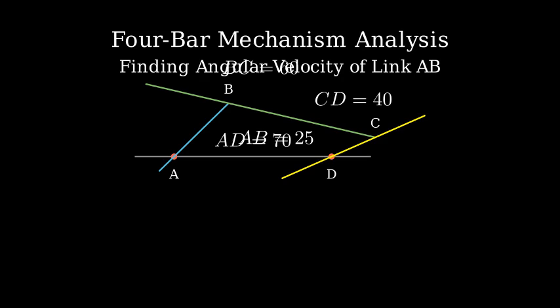Omega underscore CD, the angular velocity of CD, equals 5 radians per second counterclockwise. We'll use the relative velocity method. The velocity of point C is the vector sum of the velocity of point B and the velocity of C relative to B. This can be expressed as V underscore C equals V underscore B plus V underscore C slash B.